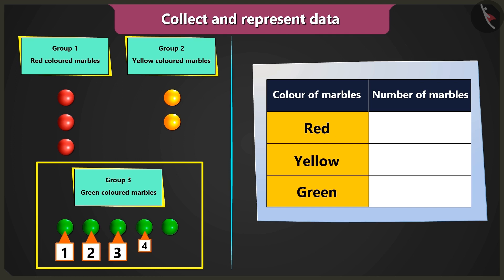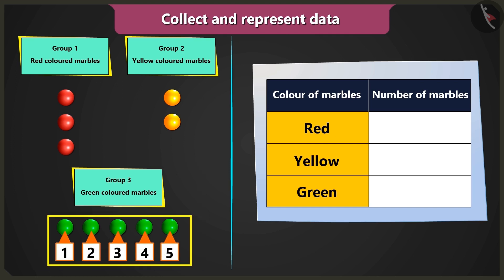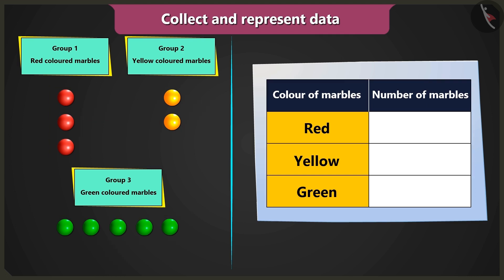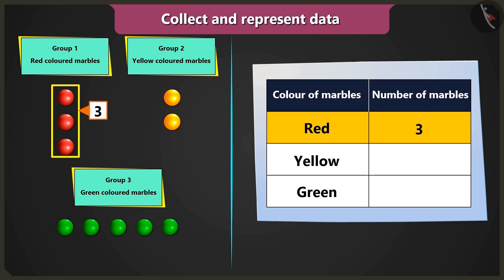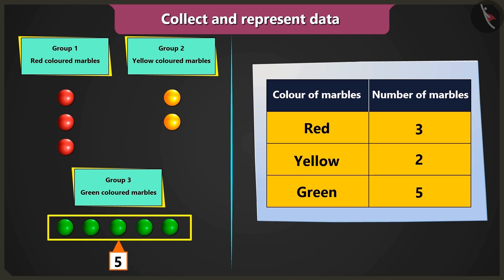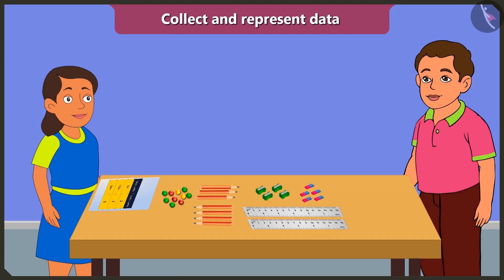And one, two, three, four, and five green marbles in the third group. Now we have to write these numbers in the table. In the column 'count of marbles', we will write three beside red color, two beside yellow color, and five beside green color. Well done, Bubbly. You represented the data very well.